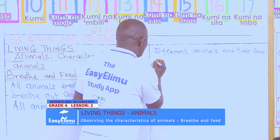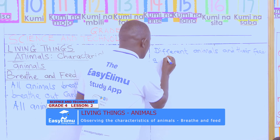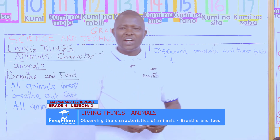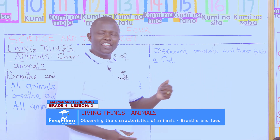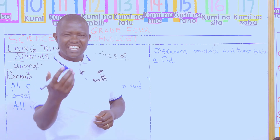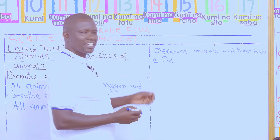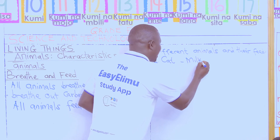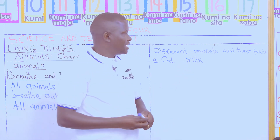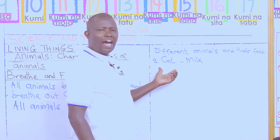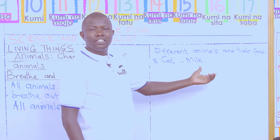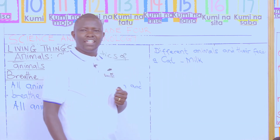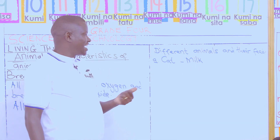For example, example one is a cat. What does a cat feed on? Yes, Victor — a cat feeds on milk. Correct! Milk is the food for the cat. A cat likes milk a lot — unlike maize and beans, it likes milk a lot. What else can we say animals feed on?